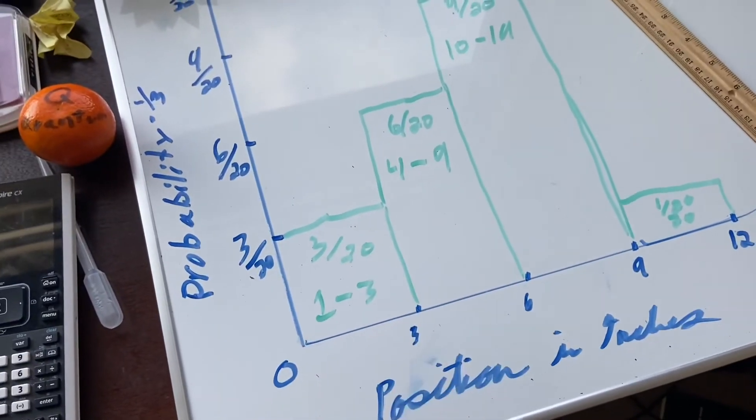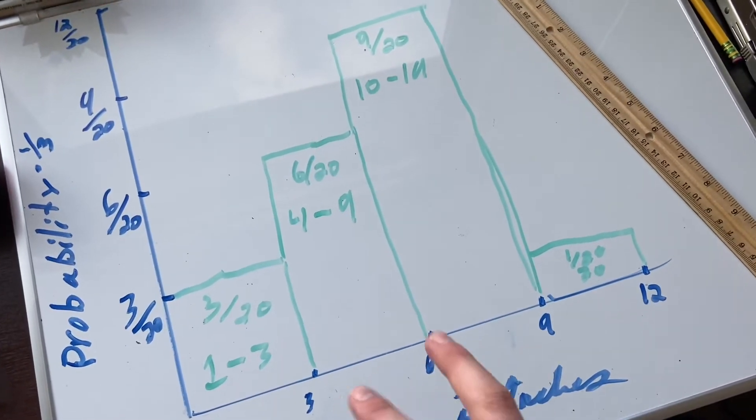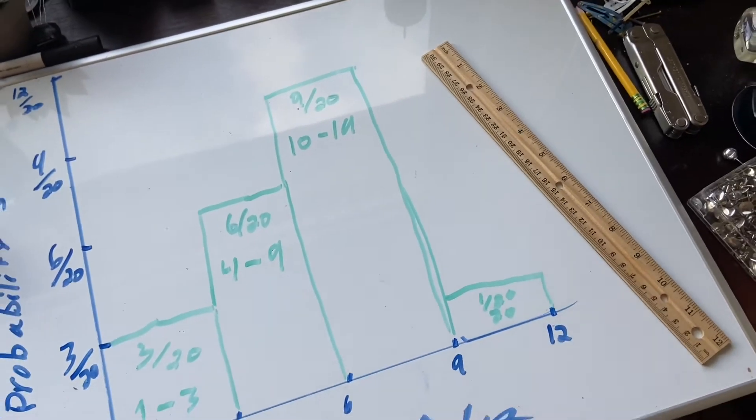There is a 3 in 20 chance of the orange being between 0 and 3 inches, there's a 6 in 20 chance of it being between 3 and 6, there's a 9 in 20 chance between 6 and 9, and 1 in 20 of it being between 9 and 12.